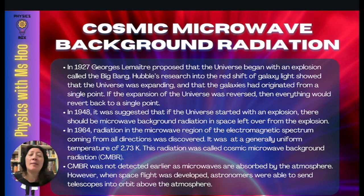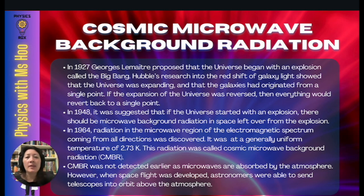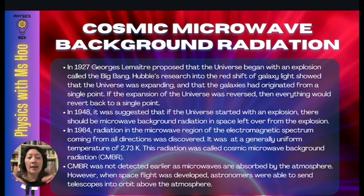Now let's look at the second proof: Cosmic Microwave Background Radiation. In 1927, Georges Lemaitre proposed that the universe began with an explosion called the Big Bang. Hubble's research into the red shift of galaxy light showed that the universe was expanding and that galaxies had originated from a single point. If the expansion were reversed, everything would revert to a single point. In 1948, it was suggested that if the universe started with an explosion, there should be microwave background radiation left over from that explosion. In 1964, radiation in the microwave region of the electromagnetic spectrum coming from all directions was discovered, at a generally uniform temperature of 2.73 Kelvin. This was called Cosmic Microwave Background Radiation, or CMBR.